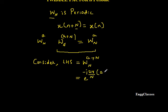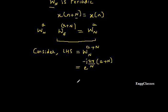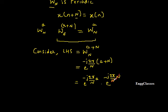Using the exponent property e^(a+b) = e^a · e^b, we split this into two terms: e to the power (minus j 2π a divided by N), multiplied by e to the power (minus j 2π divided by N times N). In the second term, N and N cancel, giving e to the power (minus j 2π).